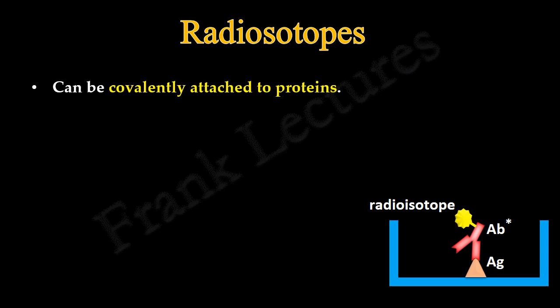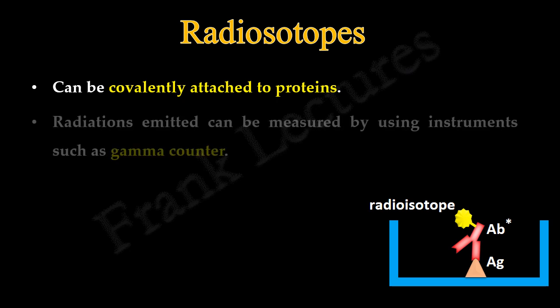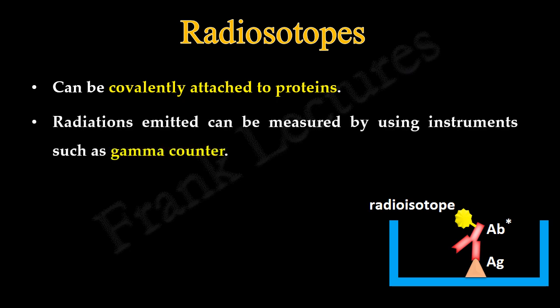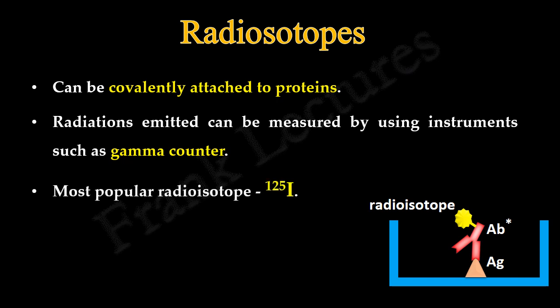Radioisotopes can be covalently attached to proteins. Since all antibodies and most antigens are proteins in their chemical nature, these radioisotopes can easily label them. The radiations emitted by the radioisotope can be detected and measured using specialized instruments such as a gamma counter. The most popular radioisotope used as a tag is iodine-125, which has a half-life of 60 days — a relatively long half-life.